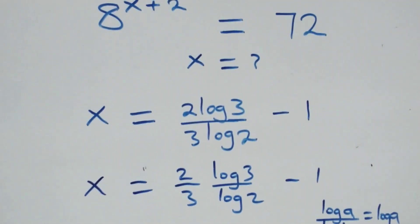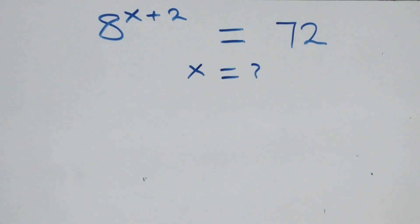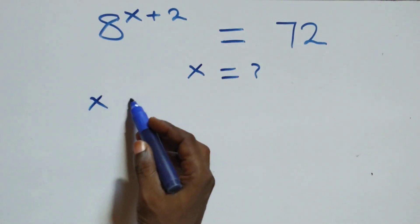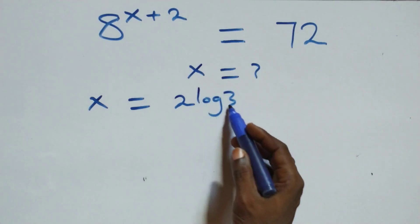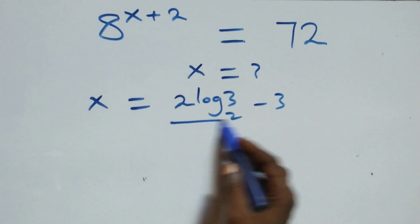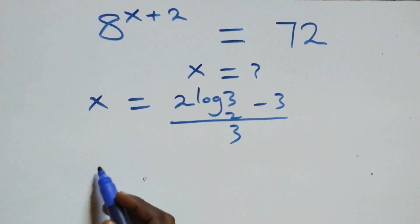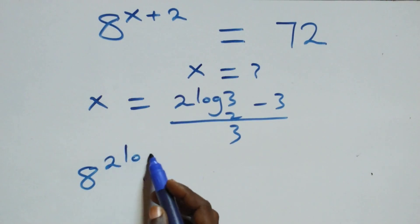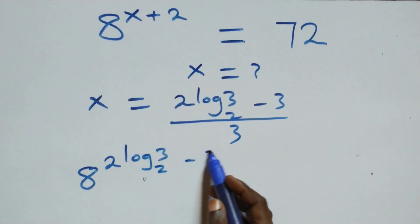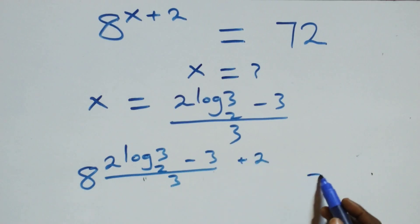Let's check if this satisfies the given problem. We substitute the value of x, which is x equals (2 log base 2 of 3 minus 3) over 3. Then what we have becomes 8 raised to power (2 log base 2 of 3 minus 3) over 3 plus 2, is it equal to 72 on this side?